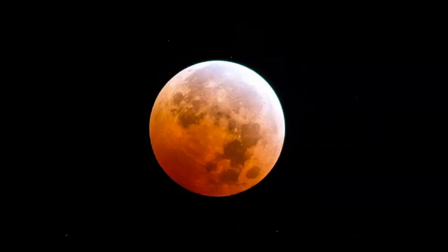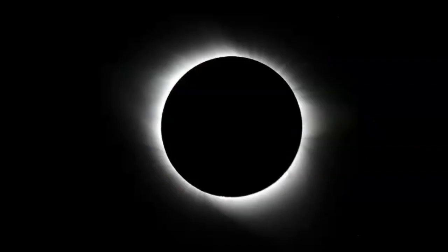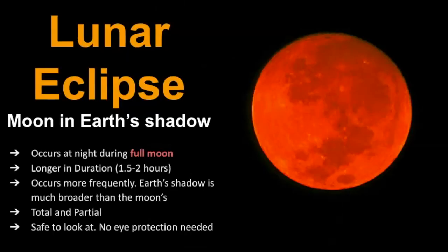Now, most people have seen a lunar eclipse at some point in their lifetime. It's much easier to see a lunar eclipse than it is a solar eclipse, and we'll explore why that is throughout this video. A lunar eclipse is when the moon passes through the Earth's shadow, and this only occurs at night during the full moon.